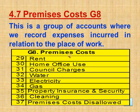Section 4.7 Premises Costs, Group 8. This is a group of accounts where we record expenses incurred in relation to the place of work — which can be an office, a shop, a warehouse, or a market stall. This includes rent, home office use, council charges, water, electricity, gas, premises insurance and security, cleaning, plus premises costs disallowed. Rent account is for the use of premises or buildings not belonging to the business. Home office use account is a portion of the owner's home expenses attributed to the business because some business work is done in the owner's personal home.